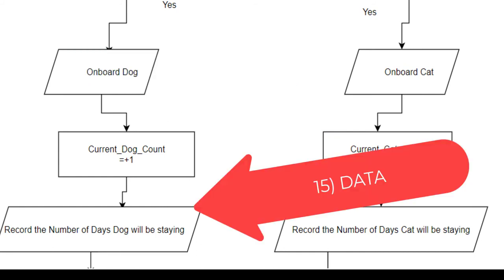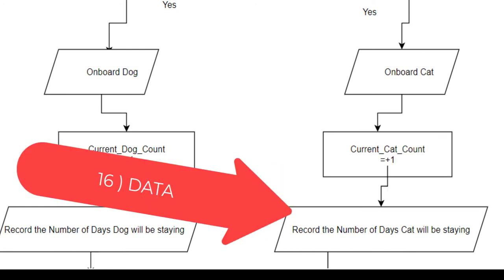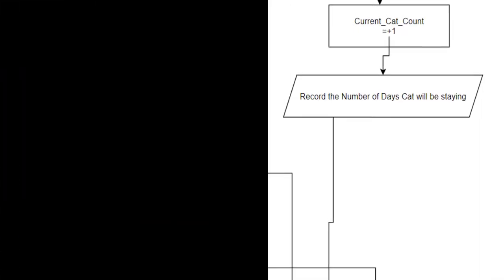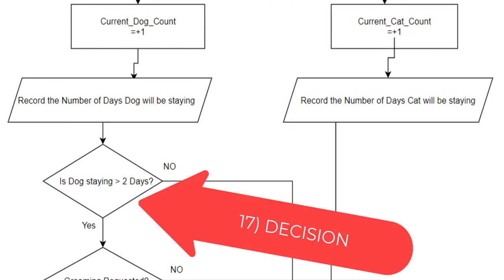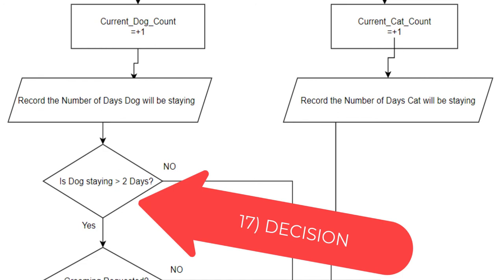After you have inputted the current dog count, you will record the number of days the dog will be staying. After recording the current cat count, you will record the number of days the cat will be staying. After we have recorded the number of days the dog will be staying and the cat will be staying, the cat will move past these next two decisions because grooming is not offered to cats. And grooming is offered to dogs only if they're staying greater than two days.